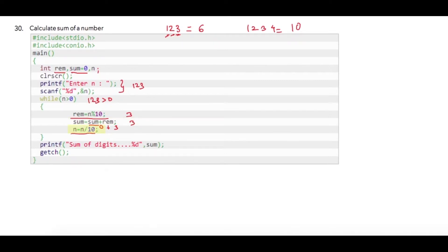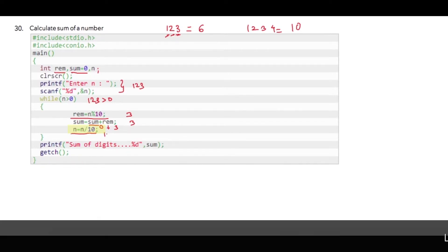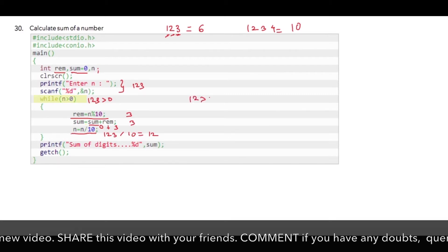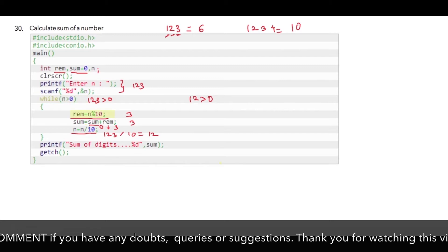So the compiler goes back again at the top. It checks whether 12 is greater than zero, it is a true condition. It fetches remainder for us, so in this case it will do 12 modulo 10, which gives us 2.